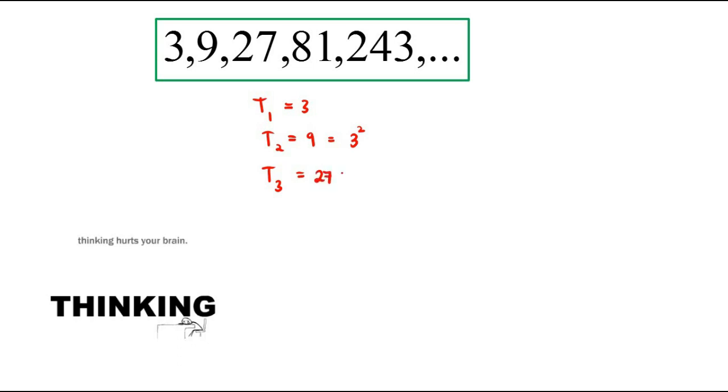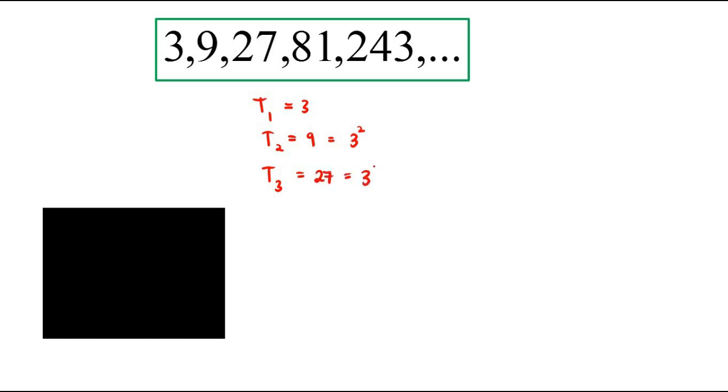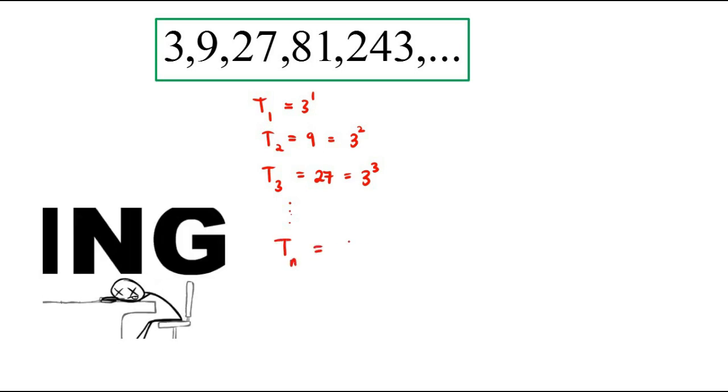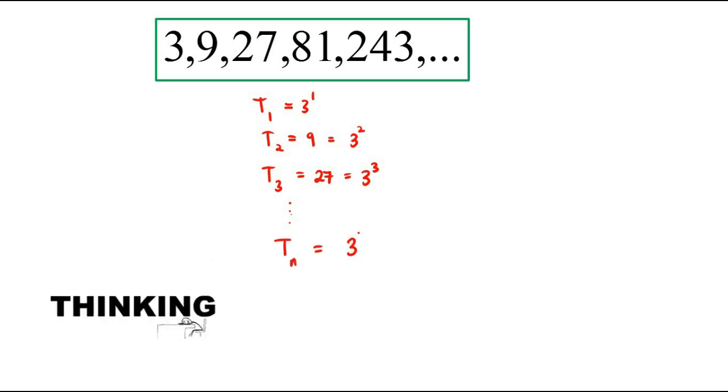Our third term is 27, which at the same time is 3 cubed, and so on. So the common pattern here would be Tn having the form of 3 to the power of n, where n is all the positive integers.